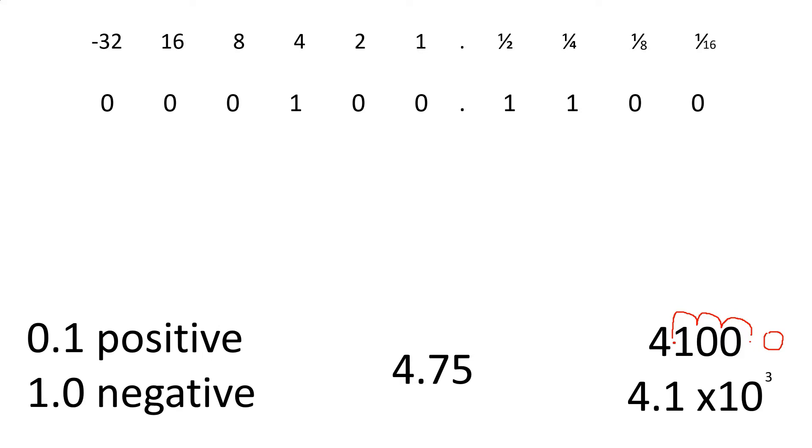When we're dealing with binary numbers, we don't want to start with 4.1, 3.1, 2.1. We want to start with either 0.1 or 1.0. If the number is positive, it's 0.1. If the number is negative, it is 1.0.